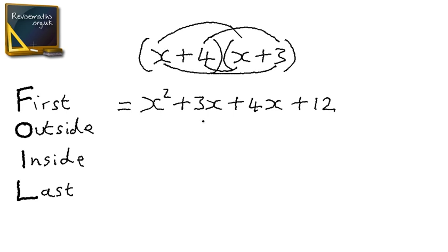So we've multiplied out or expanded our brackets, but we can do one more thing, and that is to simplify our expression. So the x squared stays as it is, 3x plus 4x is 7x, and then end with 12.